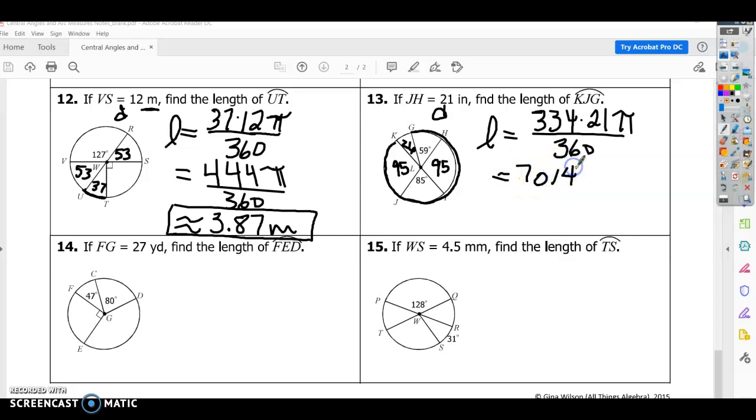7,014 pi divided by 360. And that's going to give us an approximate answer of 61.21, and this time it's in inches. So that is the length of that part of the circle.